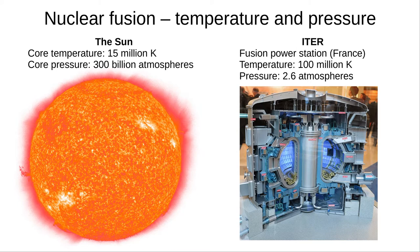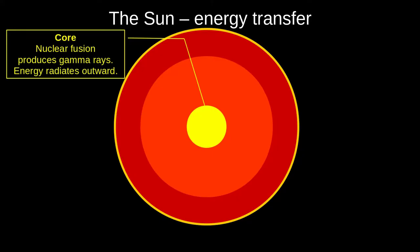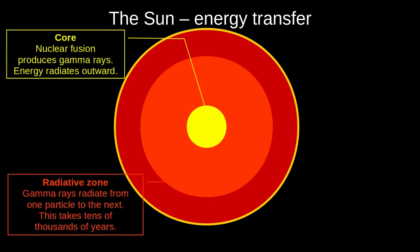Even so, fusion in the Sun is very slow, and that's a good thing. If the Sun finished its fusion in a few years, there wouldn't have been time to form the planets, let alone life on Earth. So, the core of the Sun is where nuclear fusion releases energy in the form of gamma rays. These radiate outward. They continue to radiate through the radiative zone, but they don't go in a straight line. They are absorbed by a particle every few millimetres and then re-emitted in a random direction. It takes tens of thousands of years to reach the convective zone.